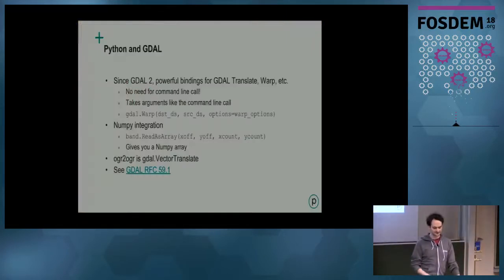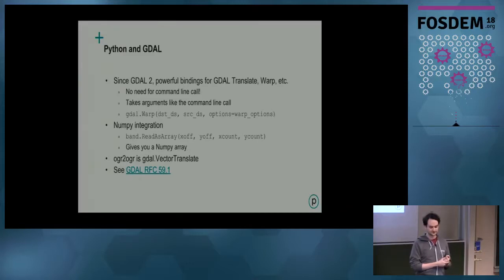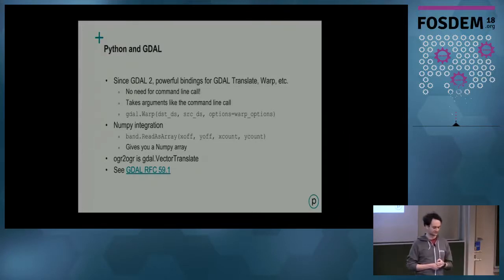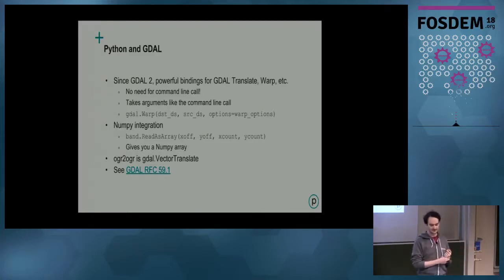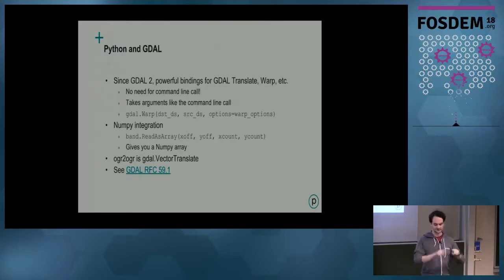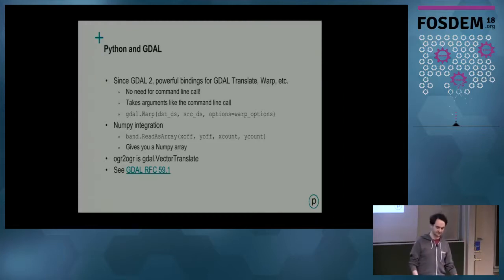Working in Python — GDAL 2 gave us a lot of powerful Python bindings. You don't need to use the command line anymore; you can basically pass the command line arguments in the Python call to GDAL warp, for instance. For OGR2OGR, it's called GDAL vector translate in the Python bindings — there's a whole RFC about how this was set up. It makes it a lot easier and you don't have to worry about subprocess calls. There's also very good NumPy integration: if you're doing windowing, you can read the array, specify the offset, and get a NumPy array to do all your raster computations.